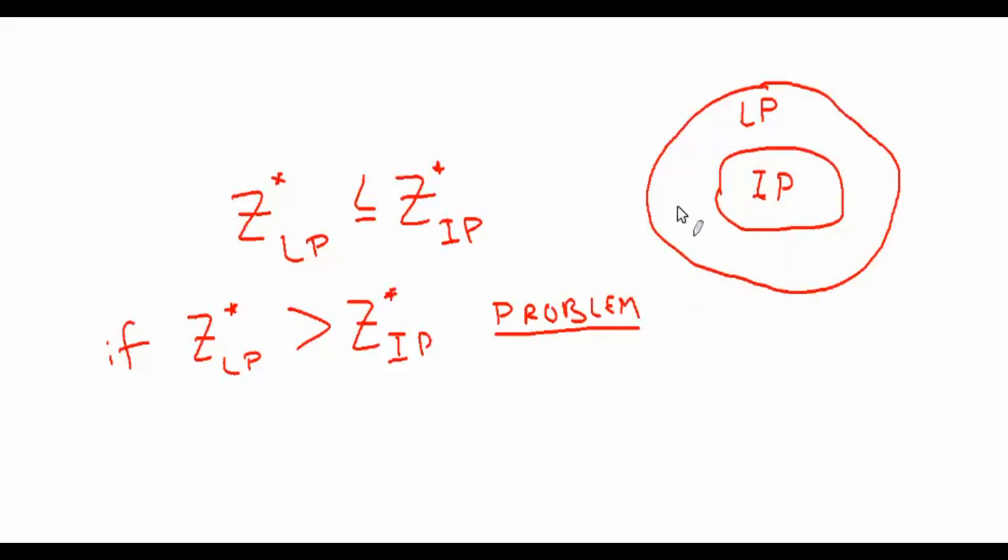It's easy to do the relaxation. Then solve the LP and see whether the best solution to the LP is greater than the best solution to the IP. And if it is then you need to go back and take a closer look and see what happened.